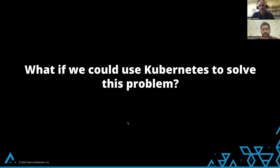What if we could use Kubernetes to solve this problem? The answer is, you actually can. What was not known to me is that Kubernetes is a control plane that can do more than container orchestration. I had always assumed that's what Kubernetes was for, but actually it's a general purpose control plane, and container orchestration was just the first use case. We'll talk about how Kubernetes can be used to solve the edge orchestration and management problems I just outlined.